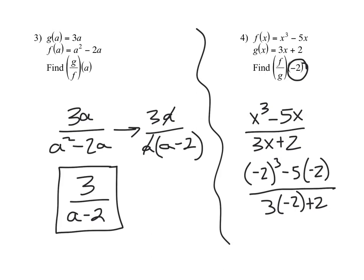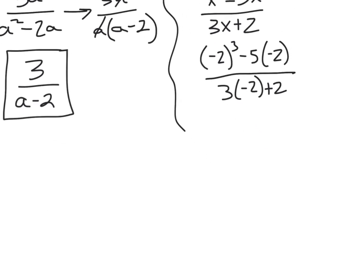Okay so negative 2 to the 3rd power is negative 8. And then if I take negative 5 times negative 2 that's positive 10 on the top. On the bottom if I take 3 times negative 2 that's negative 6 and then plus 2. Alright so on the top negative 8 and positive 10 that's positive 2, and negative 6 and positive 2 is negative 4.